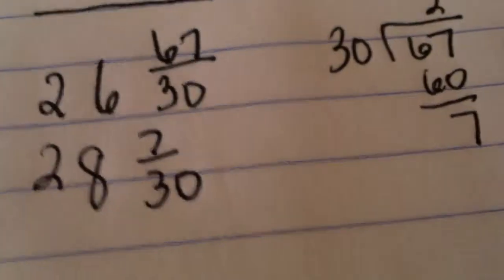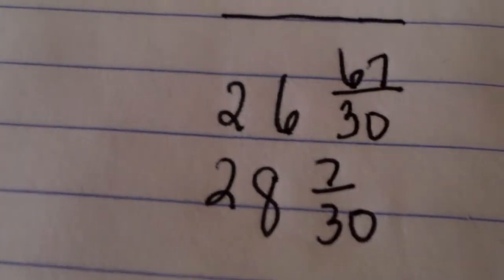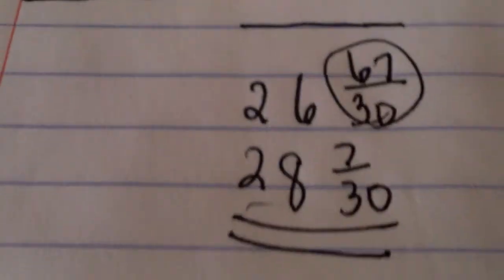But there's already 26, so now we have 28 and 7 thirtieths. We have to take this value and add it to the 26 we already have, and that's our final answer.